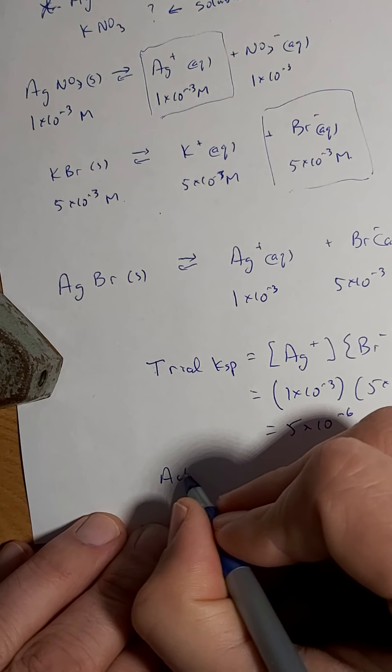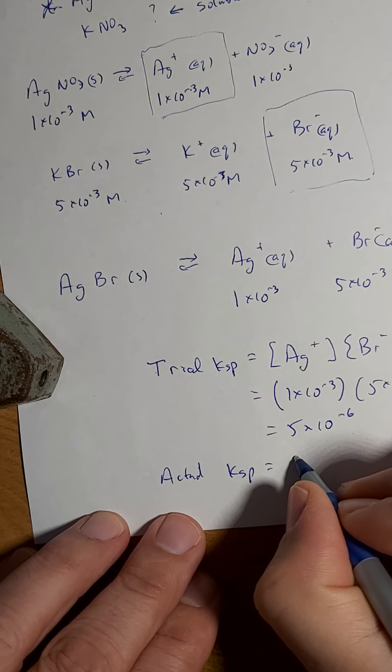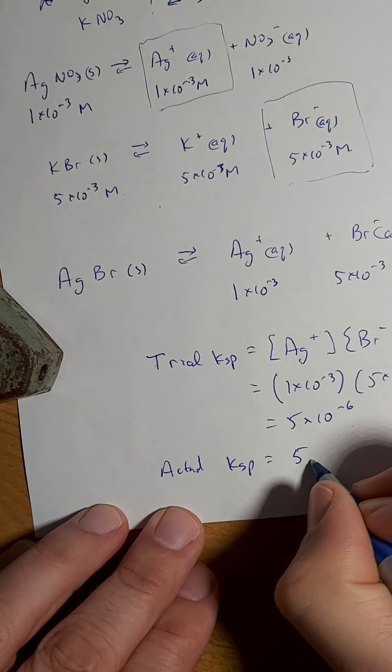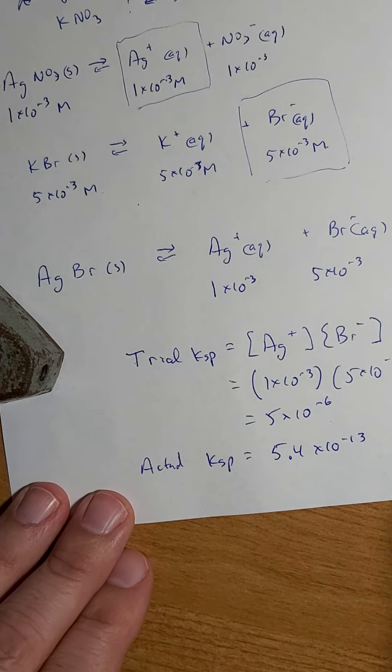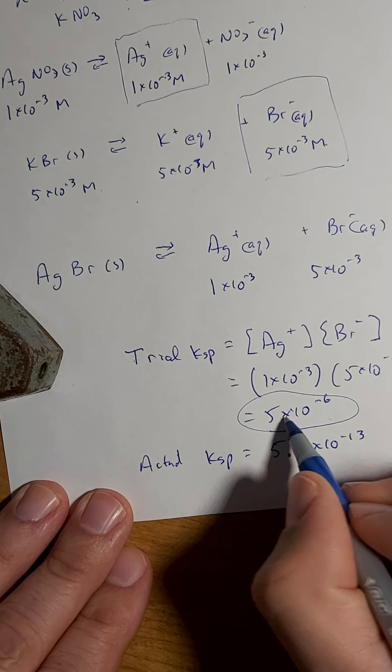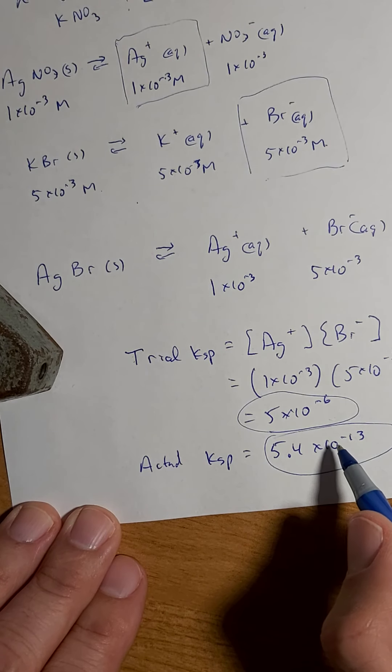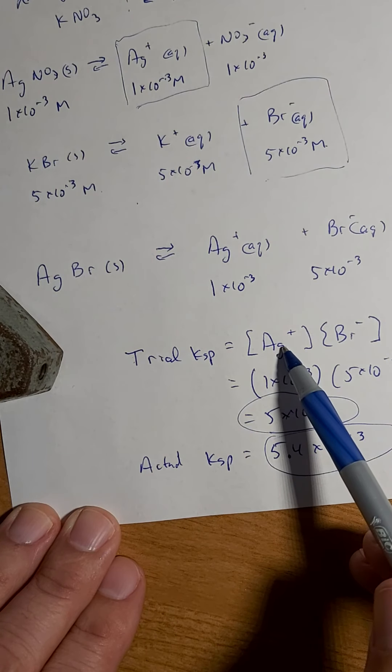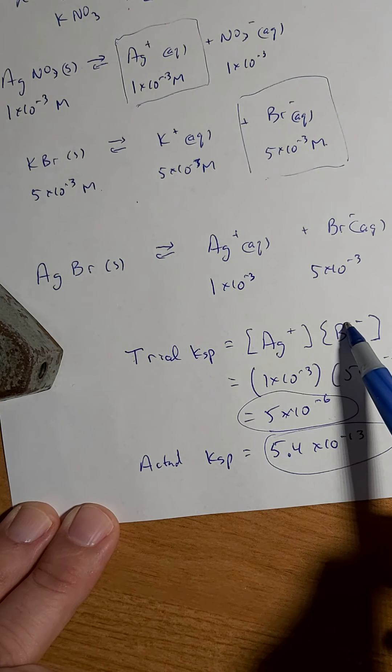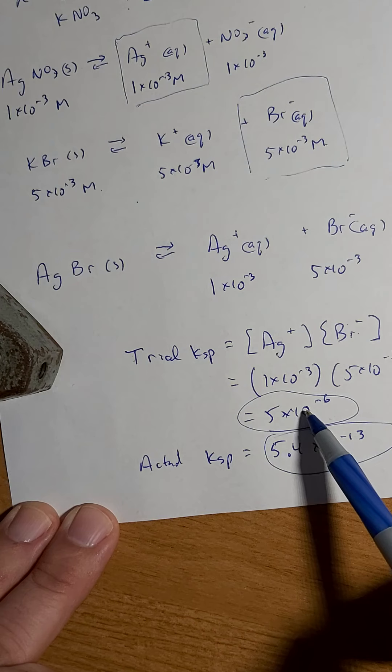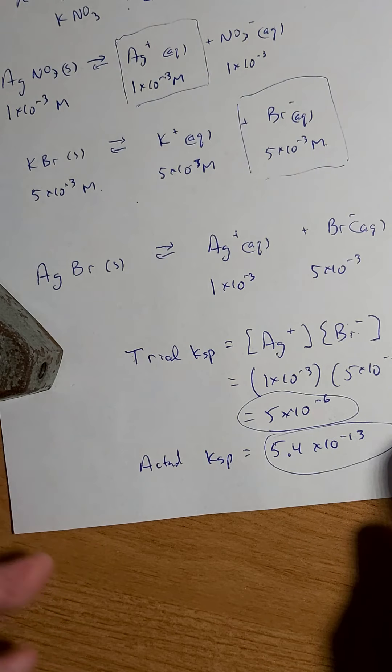Now your actual Ksp, when you look that up in different sources, you would get 5.4x10^-13. So now what I want to do is I want to look at these two numbers here. This is the maximum amount of ions. This times this at the very most can be this. Currently this times this is this. Now this is much bigger than that, way bigger, too big.